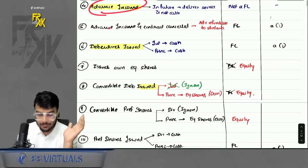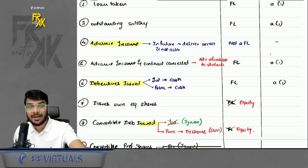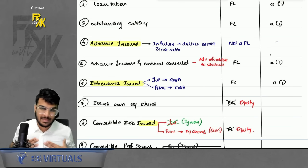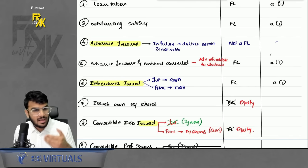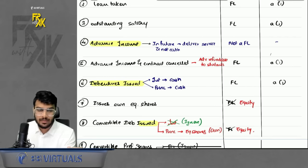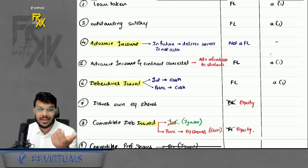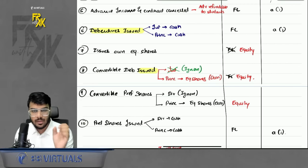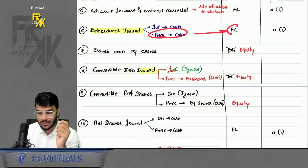Advance income — for example, fees received in advance for classes — is not a financial liability, because you will give services, not cash. However, if the contract is cancelled and you refuse to give the services, you will have to repay the money, and it becomes a financial liability. Debentures issued — a normal debenture where you repay interest and principal in cash — is a financial liability.